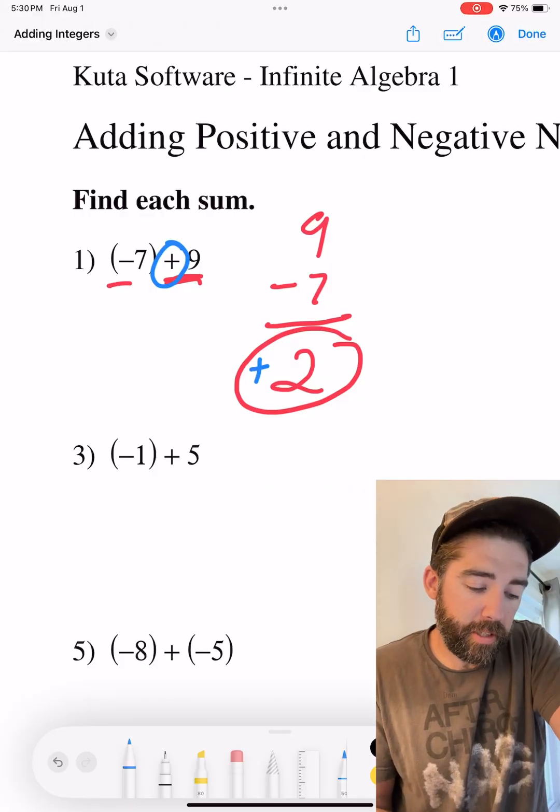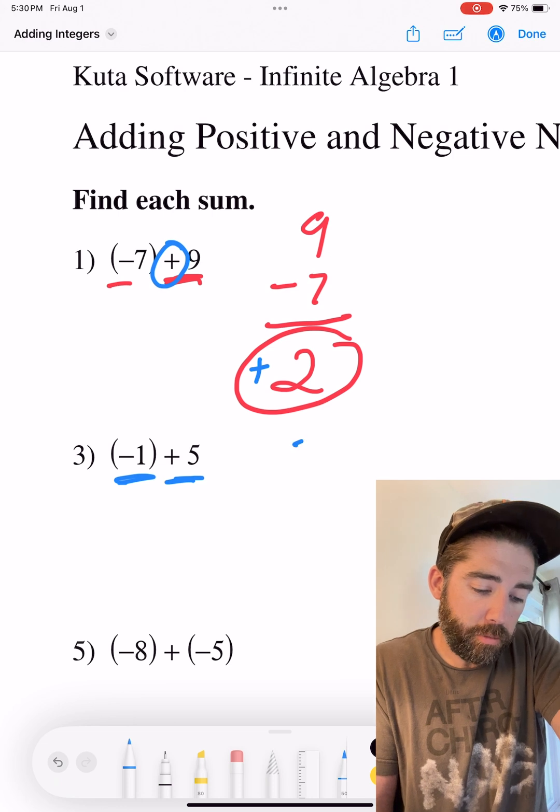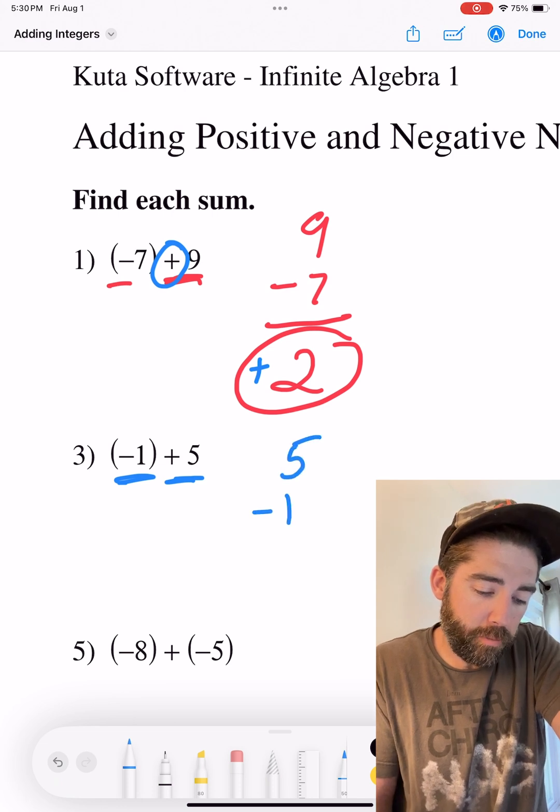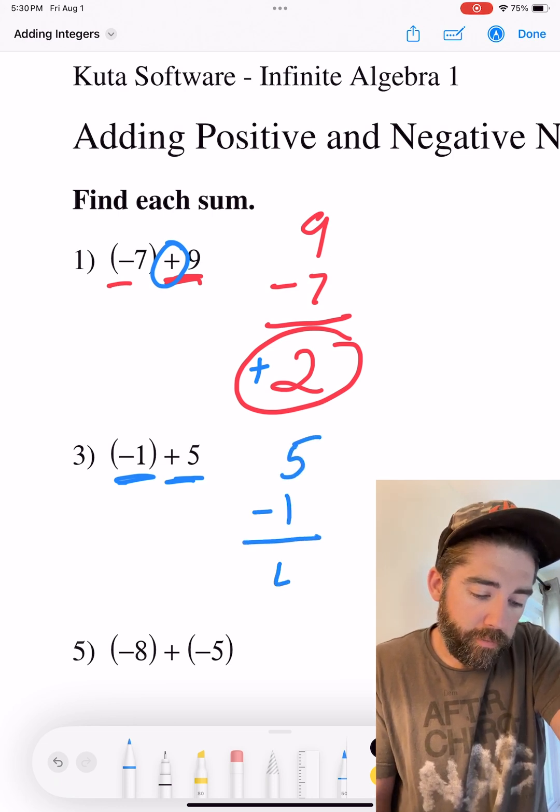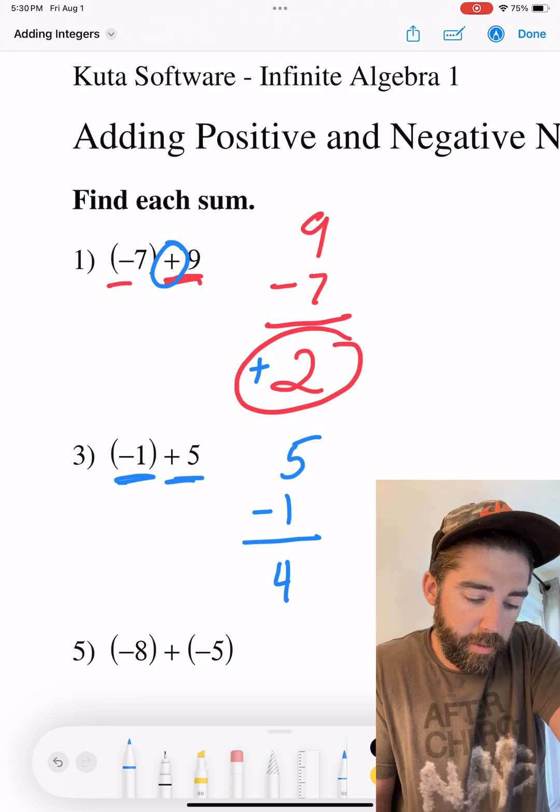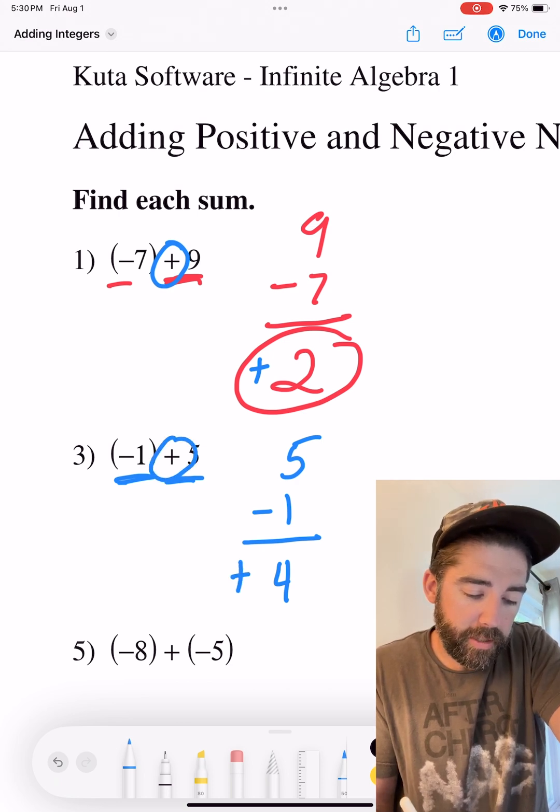We have different signs, negative 1, positive 5. So we're going to go 5 minus 1, which is 4. And we're going to keep the sign of the larger, which is our positive 5.